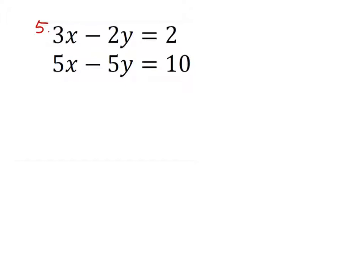So, 3 times 5 is 15. But if I do it to one of the terms, I need to do it to all of the terms here so that I don't cause the equation to go unbalanced. So, that gives me 15x minus 10y equals 10.